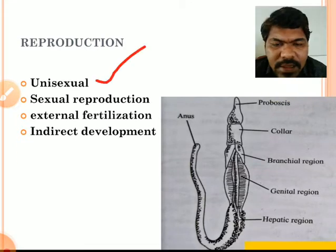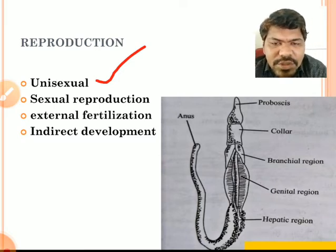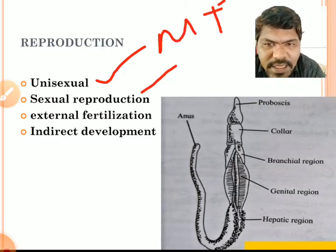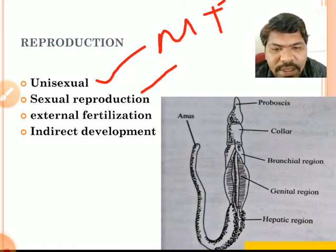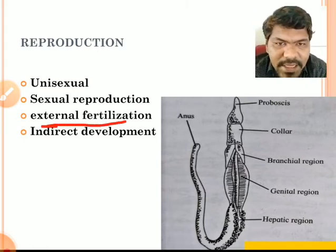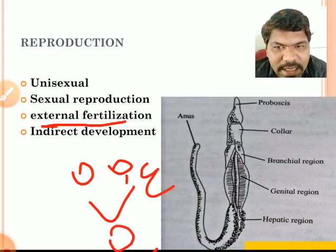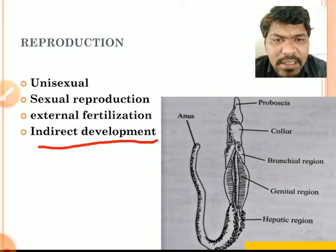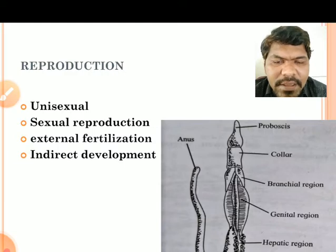Reproduction: hemichordates are unisexual animals, meaning males and females are separate. Fertilization occurs externally. They perform sexual reproduction by the formation of gametes; the fusion of male and female gametes — the zygote — occurs outside the body. Hence, they exhibit external fertilization. Hemichordates also contain a larval form, so we can say that hemichordates exhibit indirect development. Animals which exhibit indirect development have a larval form.